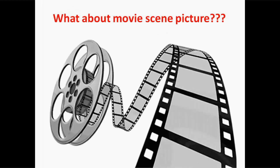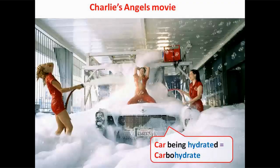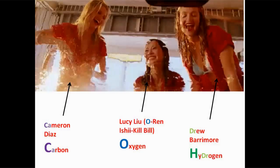What about the picture from a movie scene I mentioned from the beginning? I chose this scene from Charlie's Angels. The car being hydrated represents the carbohydrates. Also, these sweet sugarcane girls or the white soap foam could remind you of sugar. The three girls represent the three atoms that make up the carbohydrate: carbon, oxygen and hydrogen.